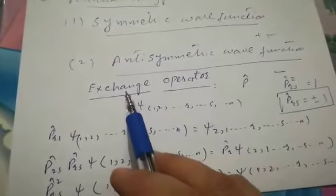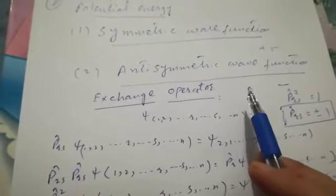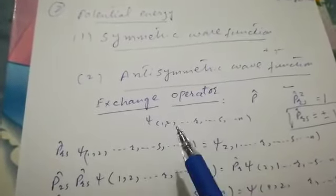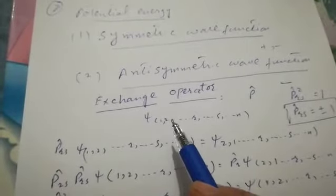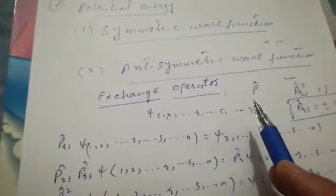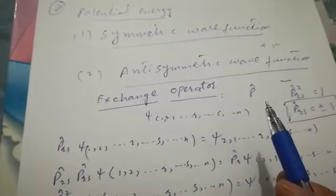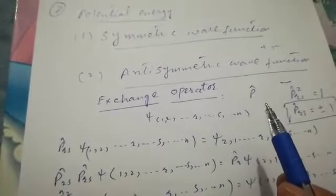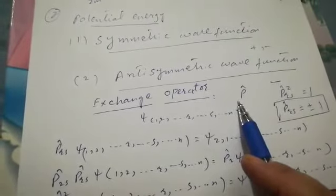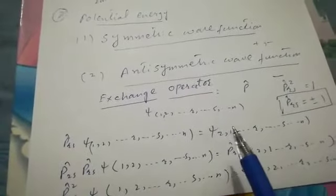We will now discuss the exchange operator. In order to exchange two particles — for example, two electrons or two protons — in order to exchange their positions, say position one and position two, we use the exchange operator. Its function is to exchange the particles, and we denote it with the symbol P-cap.